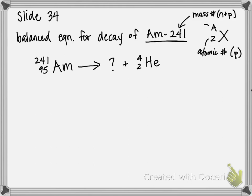What we're looking for in this problem is to figure out what exactly that question mark element is. From here it pretty much just becomes simple addition and subtraction — we need the numbers on both sides to equal one another. For step two, we determine the missing mass number: what plus 4 gives you 241? We take 241 minus 4 to get 237. That's the mass number of our missing element.